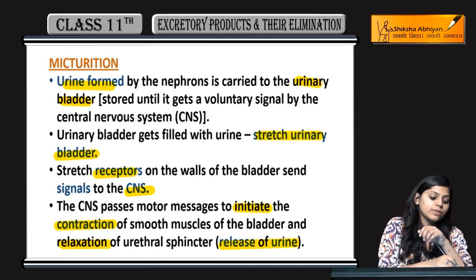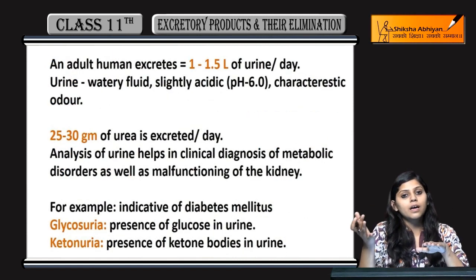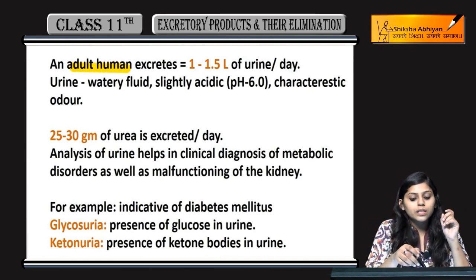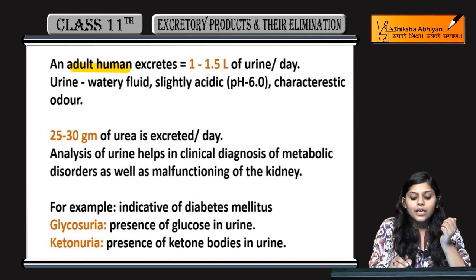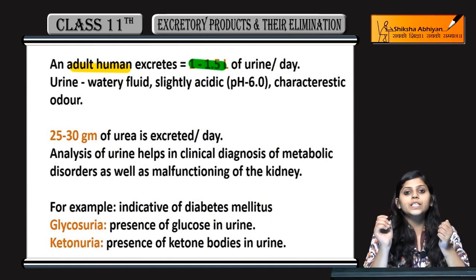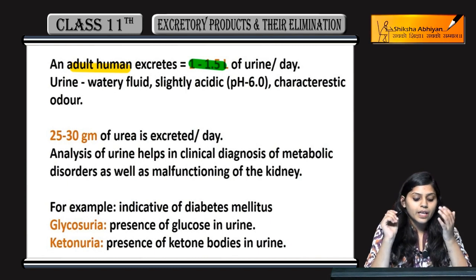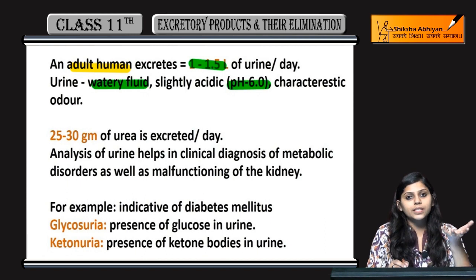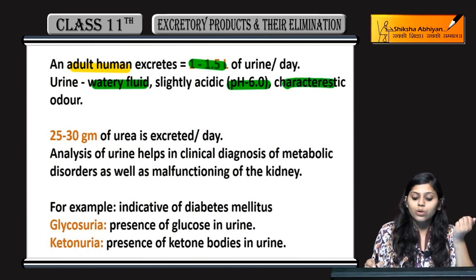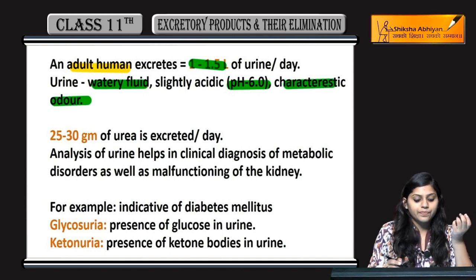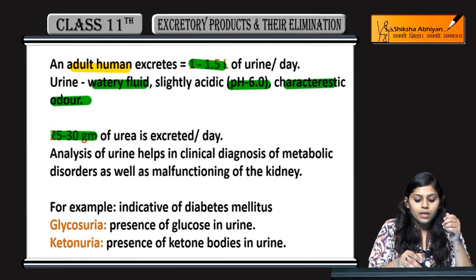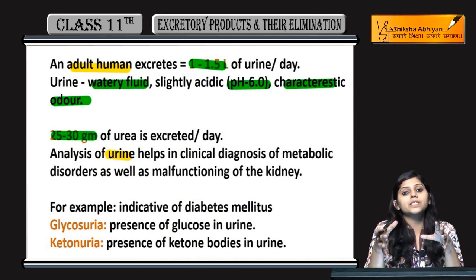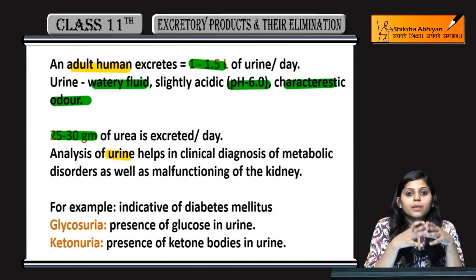Ye hai micturition ka process jiski wajah se urine ka passage hoga. An adult human excretes 1 to 1.5 liters of urine in a single day. Urine watery fluid hai that is slightly acidic, which is pH 6, characteristic odor hoti hai urine ki, aur 25 to 30 grams of urea is excreted per day.